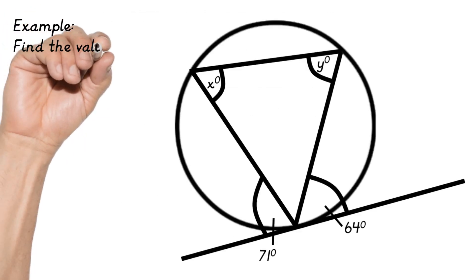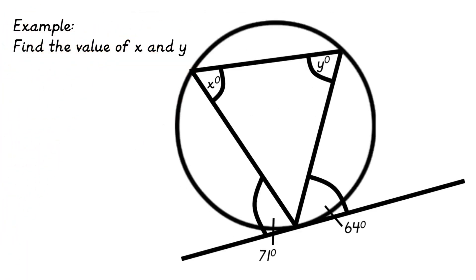Find the value of X and Y. If you look at X and 64, 64 is actually closest to Y in terms of opposite, but it's actually the other one that we're looking at. So X and 64 are equal.